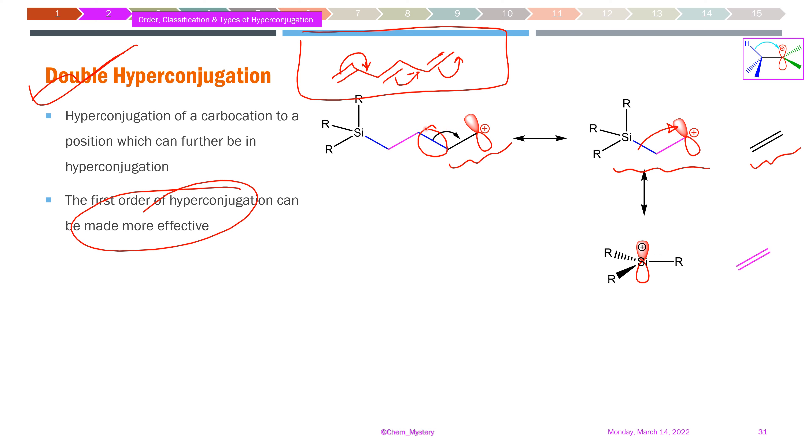This is facilitated by the second hyperconjugation. When we combine these two steps together, this is what we call double hyperconjugation—both processes occurring simultaneously.